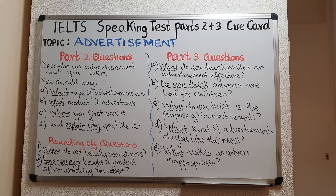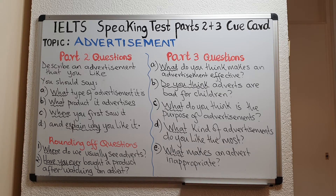Let us begin with the part two questions. The question is: describe an advertisement that you like. You should say: A) what type of advertisement it is, B) what product it advertises, C) where you first saw it, and D) explain why you like it. Let us begin with A — what type of advertisement it is.